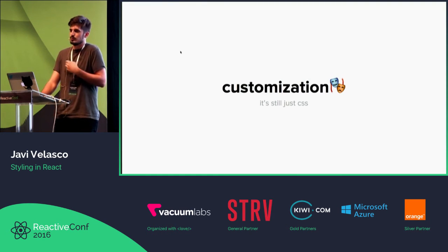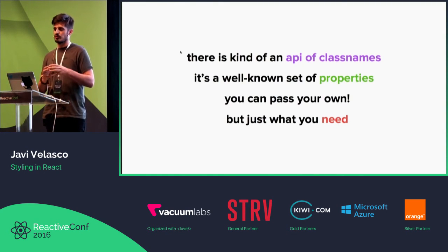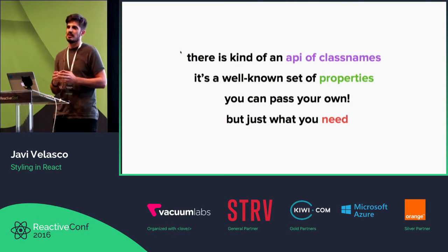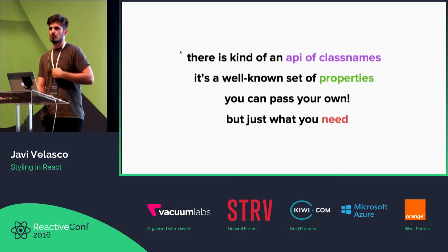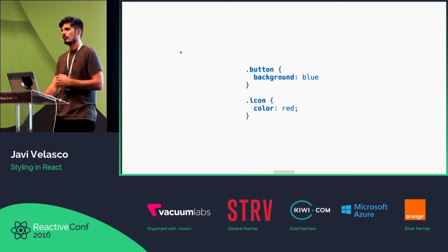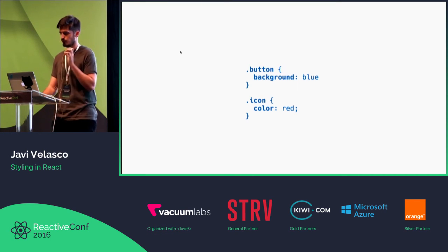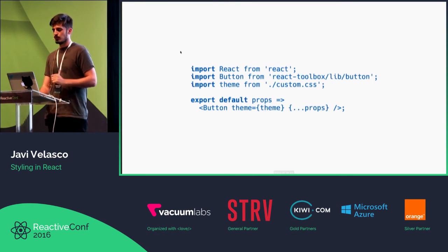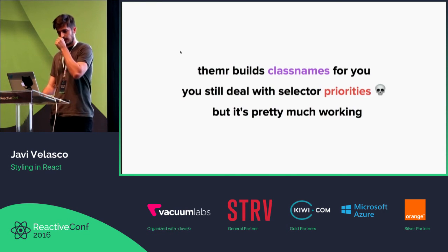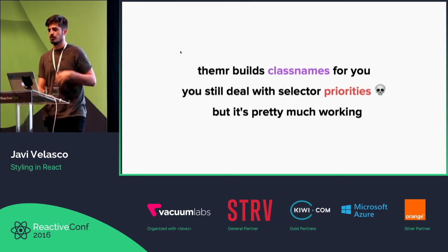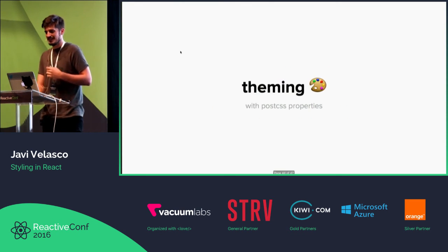But what about customization? You have to think that this is just CSS. A CSS module is nothing but a bunch of class names, so it's implementing kind of a contract, kind of an API of class names. So you can pass your own, but you just want to pass what you need. So if you want to customize a component — for example, set the background blue for just a button — you can pass it like that, and React Theamer is going to create the appropriate class name for you. You still have to deal with selector priorities, but it's pretty much working.